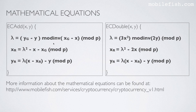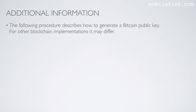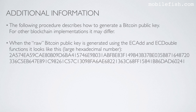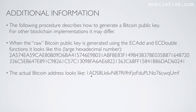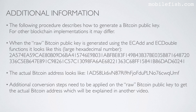More information about these mathematical equations can be found at a web address provided in the description below. The following procedure describes how to generate a Bitcoin public key; for other blockchain implementations it may differ. When the raw Bitcoin public key is generated using the ECAdd and ECDouble functions, it looks like a large hexadecimal number. The actual Bitcoin address requires additional conversion steps, which will be explained in another video. Here I will only focus on generating a raw Bitcoin public key using the ECAdd and ECDouble functions.